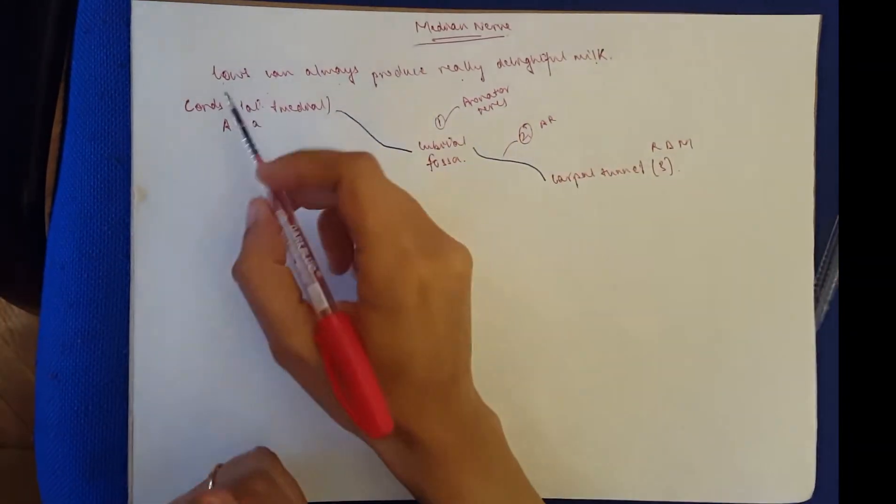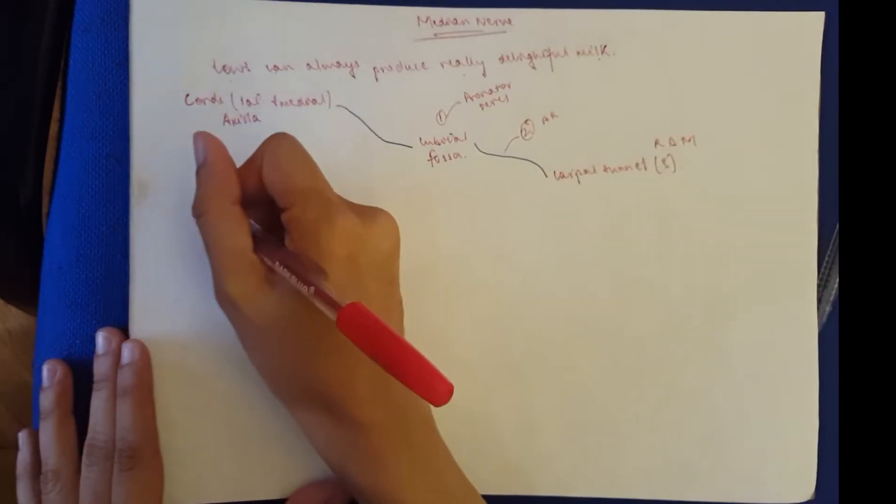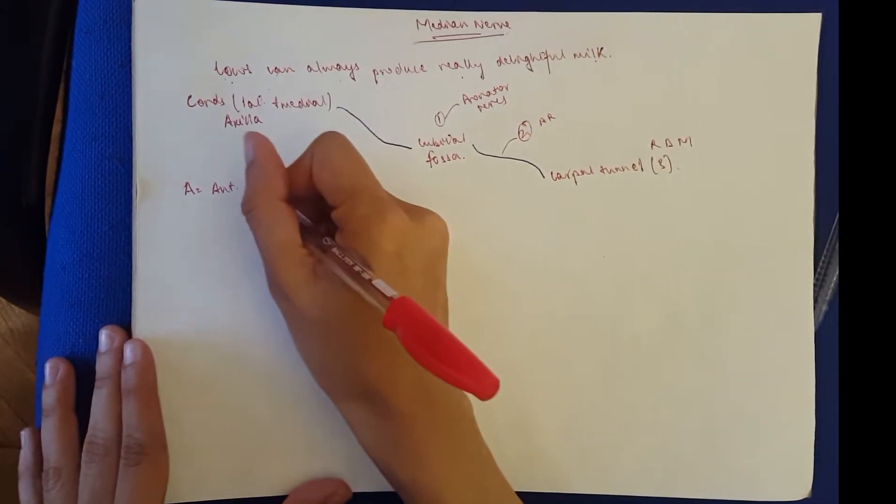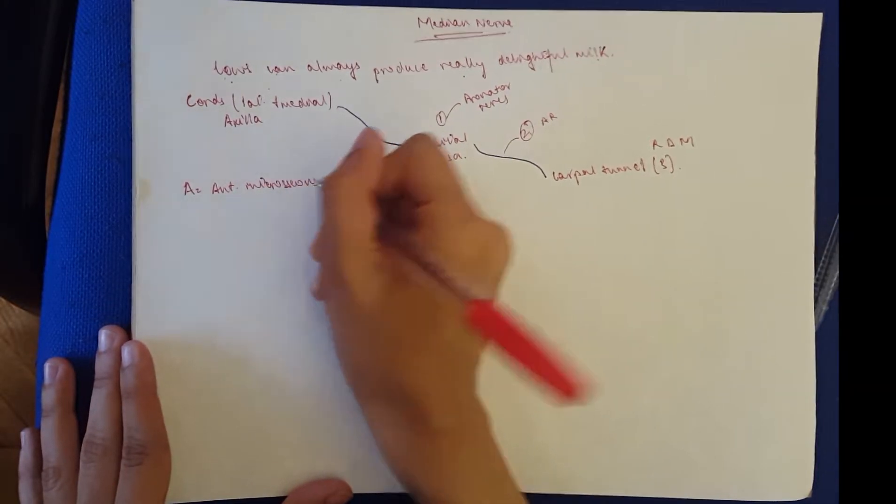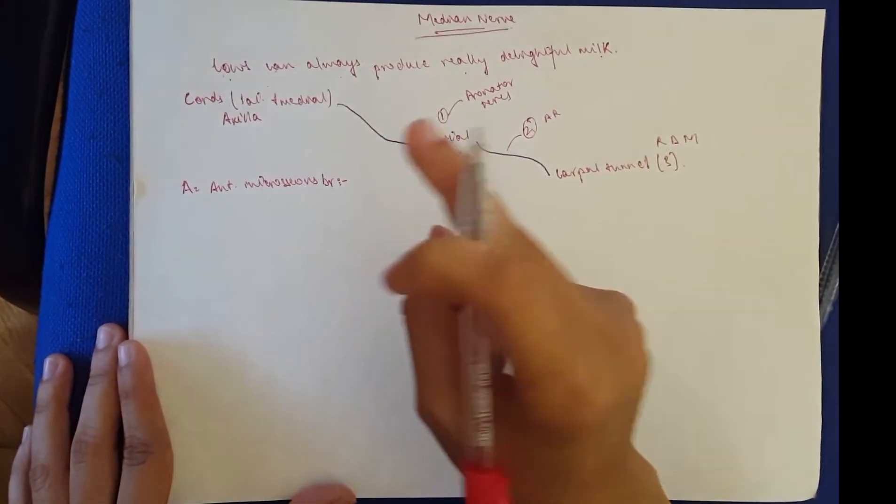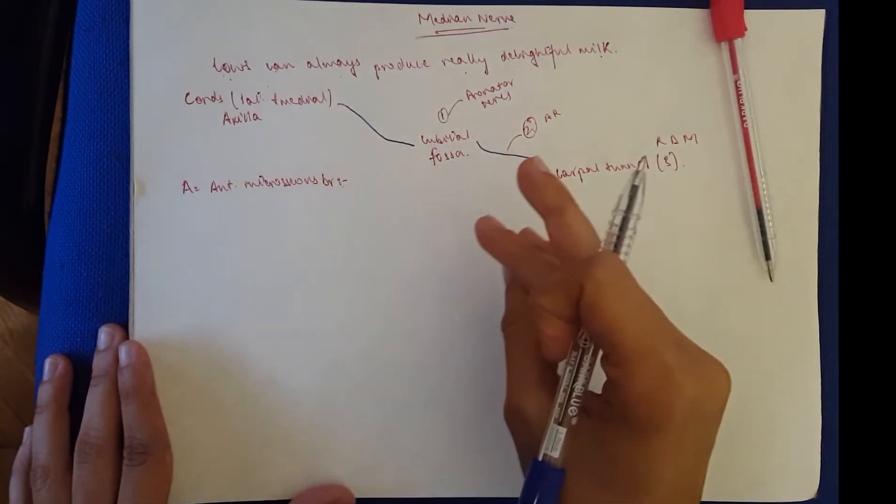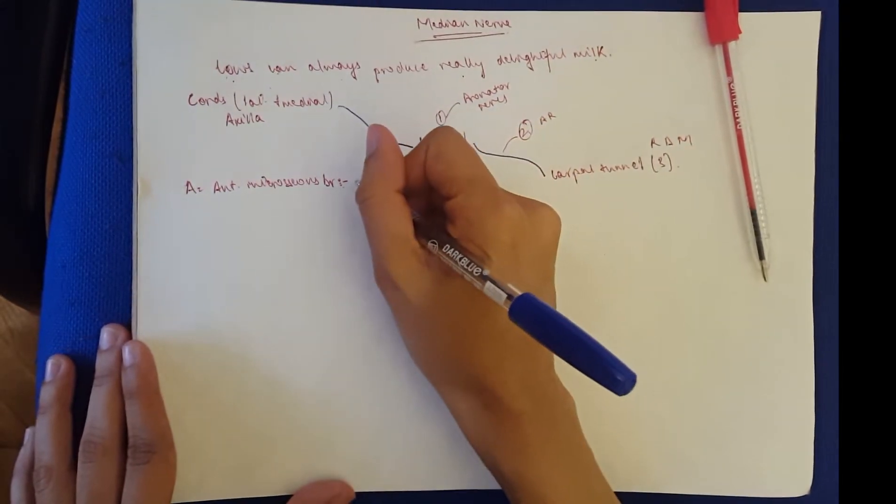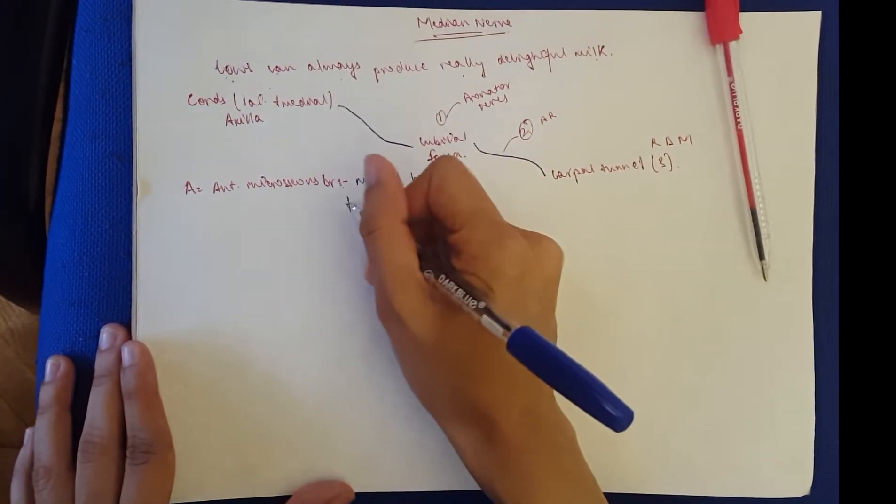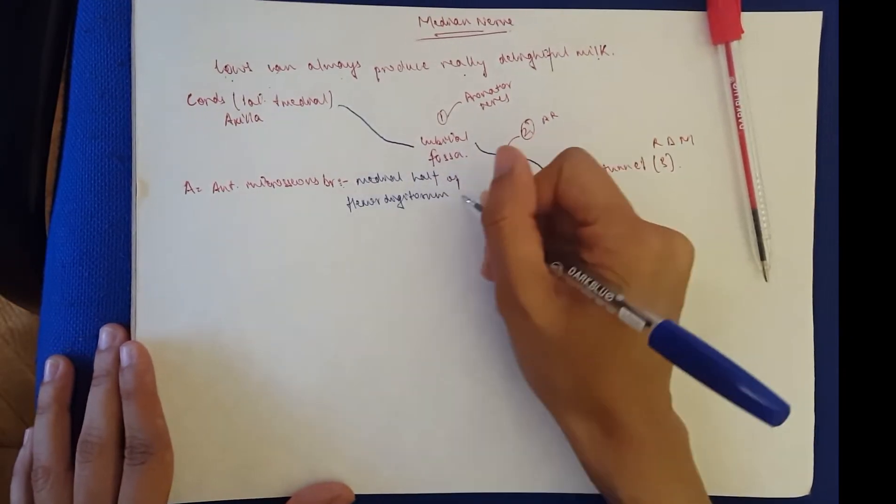This is our root, that's for cows can. Now we go on to the innervation. A would be the anterior interosseous branch. This branch supplies the deep group of the anterior compartment of the hand, which is the muscles except for the medial half of the flexor digitorum profundus.